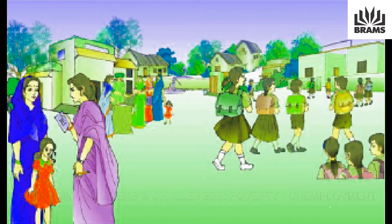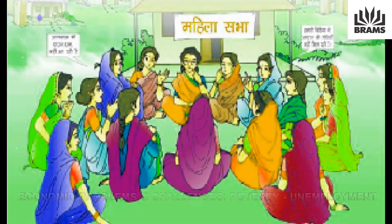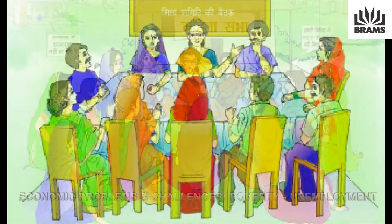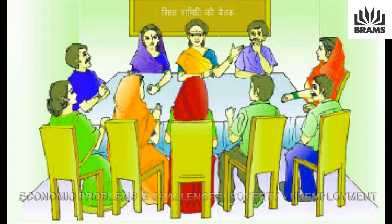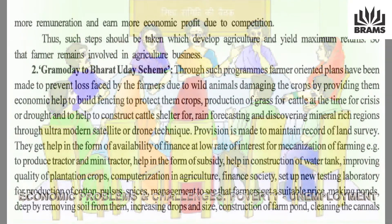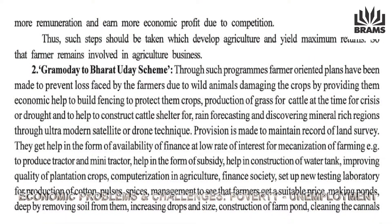Surveys of important minerals are conducted and provision is made to maintain records of land surveys. Farmers get help in the form of finance at low rates of interest for mechanization of farming — including tractors and mini tractors — and subsidies. There is also help in construction of water tanks, improving quality of plantation crops, computerization in agriculture finance societies, and setting up new testing laboratories for production of cotton, pulses, and spices.